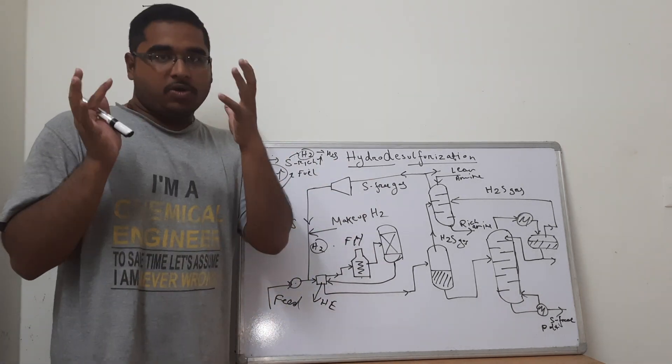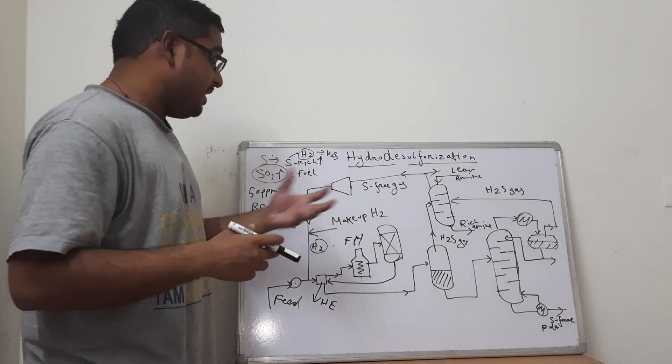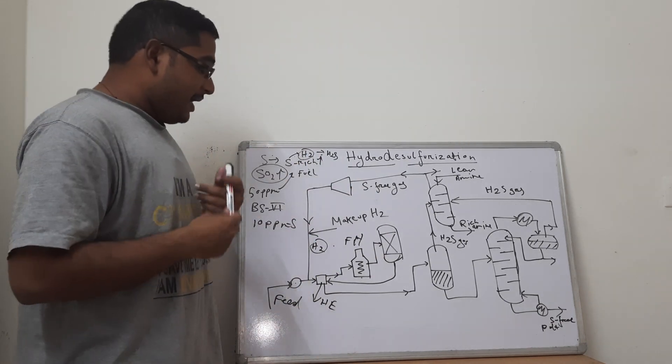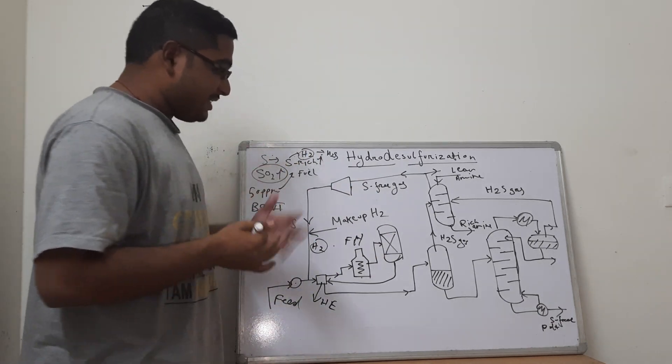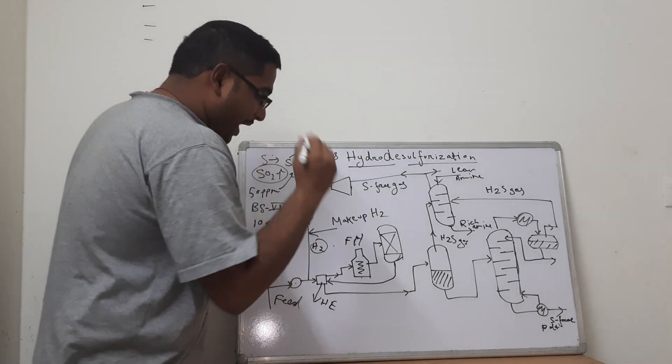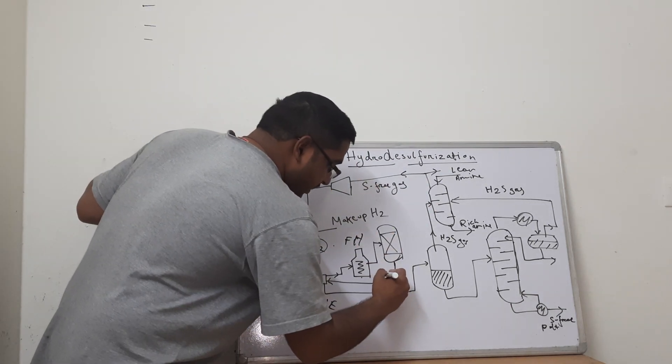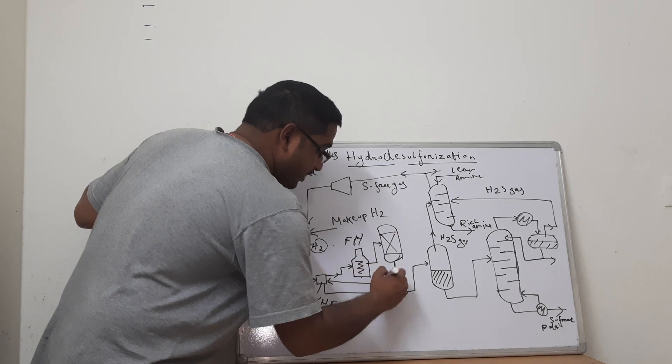So it is gaining some amount of heat and as it enters the reactor bed, it is already heated up the reactor stream. And as we exit the reactor, primarily, most of the sulfur is being consumed up by hydrogen and H2S is being formed.